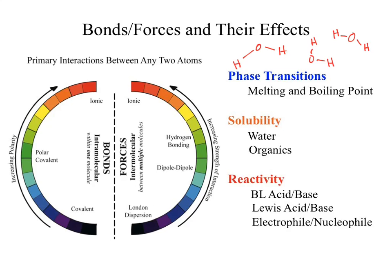If we look at phase transitions, melting points, and boiling points, those are determined based on bonds or forces. When we go through a phase transition, are we breaking a physical bond or breaking the force? It's a force. To have ionic forces you need to have an ionic bond in the structure. So if we can look at a structure, we can correlate our bonds and determine what forces will show up in bulk phase.